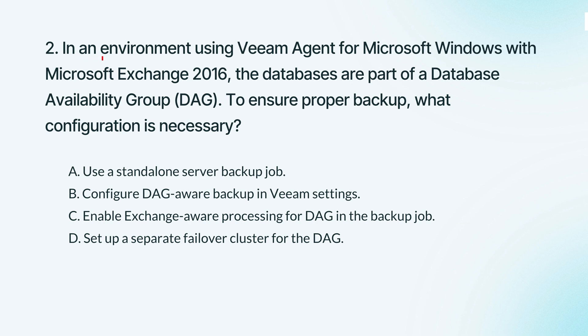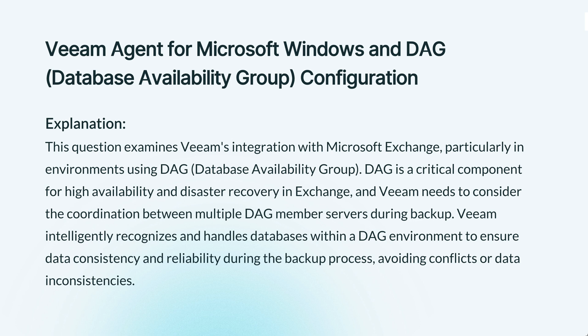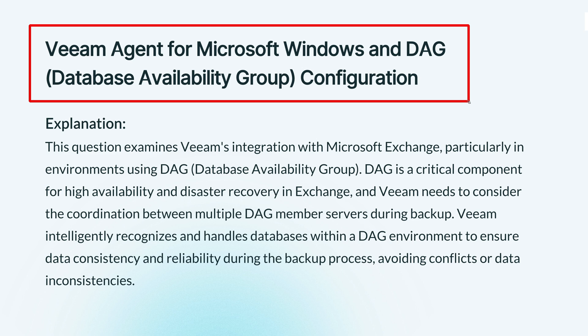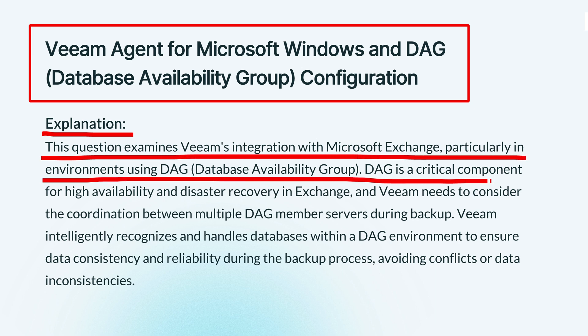Question 2. In an environment using Veeam Agent for Microsoft Windows with Microsoft Exchange 2016, the databases are part of a database availability group. To ensure proper backup, what configuration is necessary? The knowledge points of this question are Veeam Agent for Microsoft Windows and DAG configuration. This covers how Veeam handles backups in environments using Microsoft Exchange DAG. DAG ensures high availability for Exchange, and Veeam needs to backup all DAG members correctly to keep data consistent and reliable.